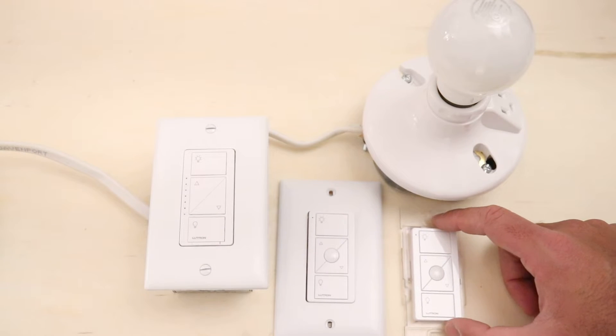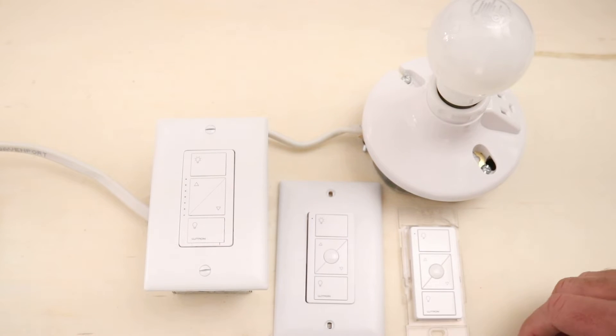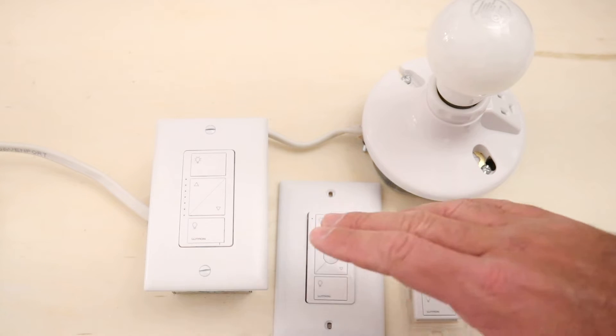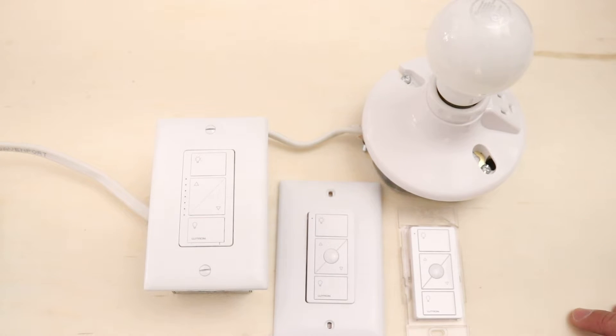Hi, James with The One Hour Smart Home, and today we're going to show you how to make a four-way switch with your Lutron Caseta system and setup. This works with three switches. A four-way switch is three switches.